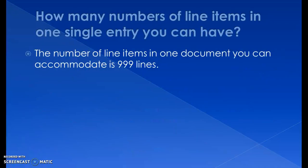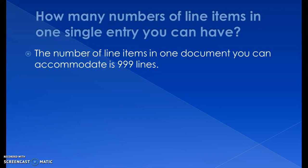How many line items can you have in one single entry? The number of line items in one document can be up to 999 lines. If we have more than 999 line items, we need to create another document to accommodate the additional lines.